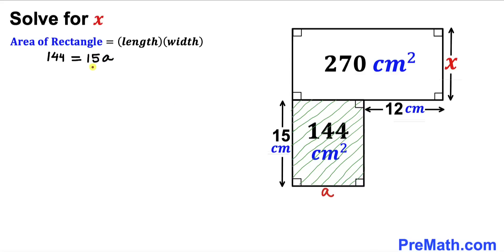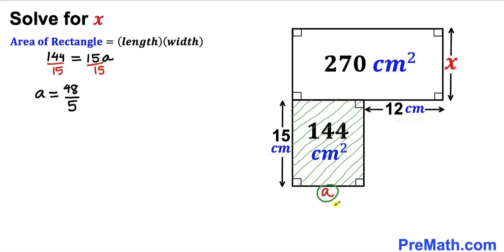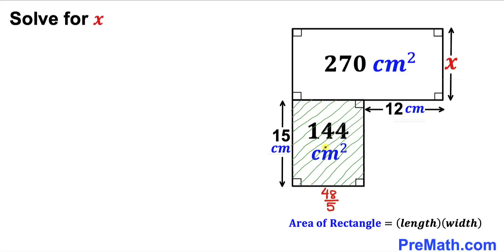Dividing both sides by 15 to isolate a, we get a equals 144 divided by 15, which reduces to 48 divided by 5. So the value of a is 48/5 centimeters. Since we are dealing with a rectangle, the opposite side is also 48/5 centimeters.